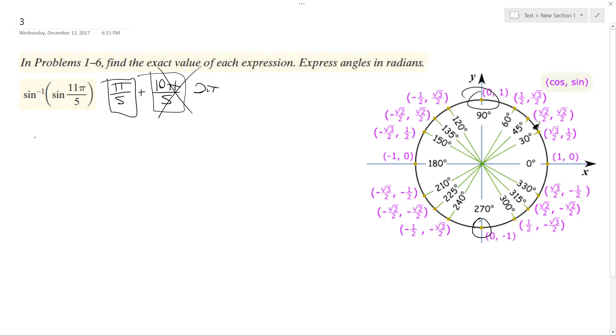So that means that the inverse of the sine of 11 pi over 5 or essentially sine of pi over 5 is whatever this radian value is, which ends up being equal to just pi over 5.